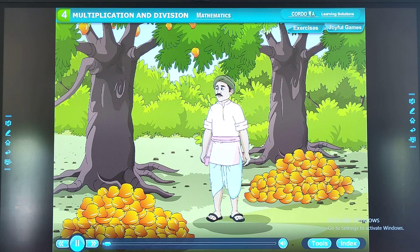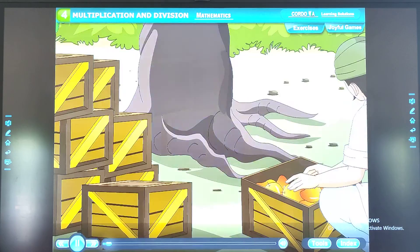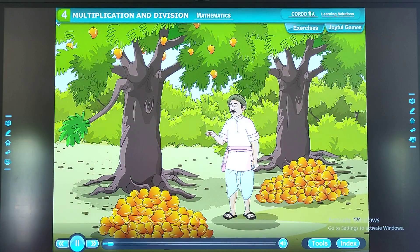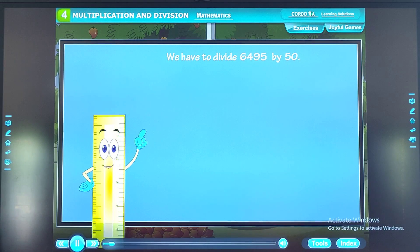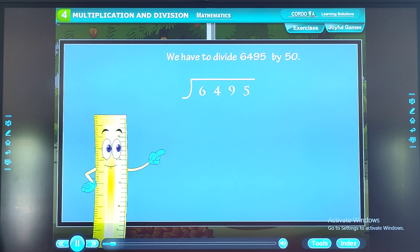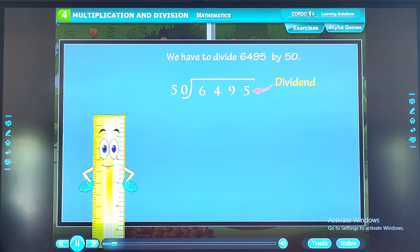How many boxes are required to pack these 6,495 mangos? 50 mangos can be packed in each box. How many mangos will be left? Solution, we have to divide 6,495 by 50. Here, 6,495 is dividend and 50 is divisor.